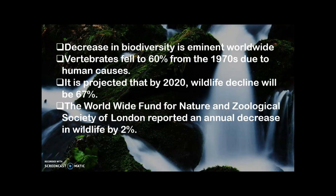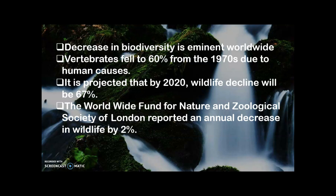Since 1970, a decrease in biodiversity has been imminent worldwide. In fact, only 60 percent of vertebrates remained due to human causes, and it was projected that by 2020 wildlife would decline to 67 percent. The World Wildlife Fund and the Zoological Society of London reported an annual decrease in wildlife by 2 percent. The major cause is human population, which has doubled since 1960, as humans have industrialized the natural habitat of wildlife and marine life, leaving these creatures with no place to live.